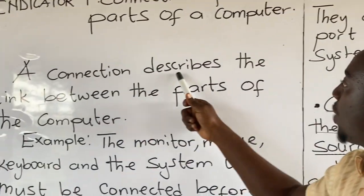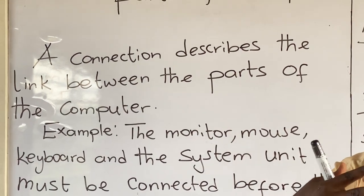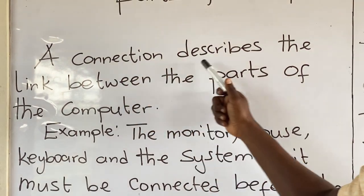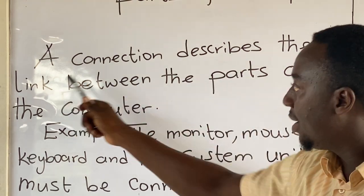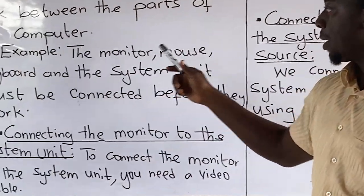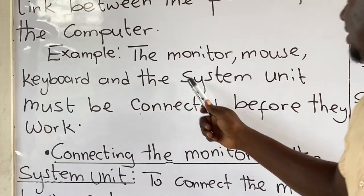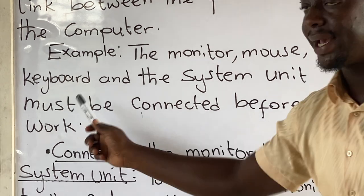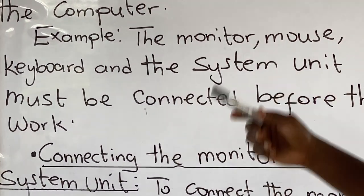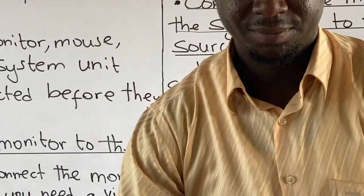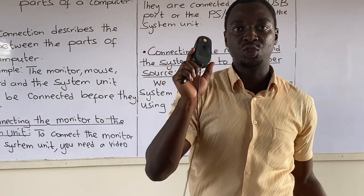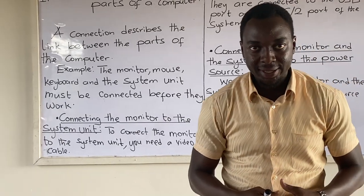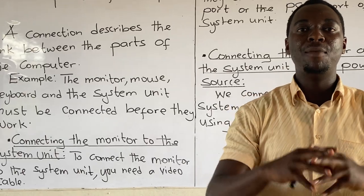A connection describes the link between the parts of the computer. For example, the monitor, mouse, keyboard, and the system unit must be connected before they work. There should be something that will link them up before they are able to work.